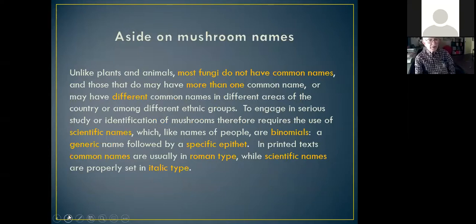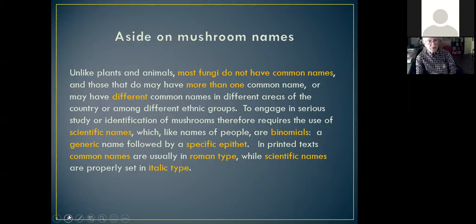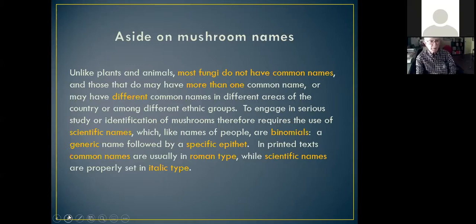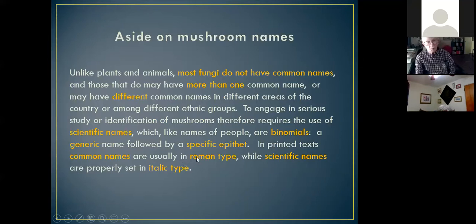One thing different about mushrooms compared to other plants and animals is that very few have common names. Some do, but they may have more than one common name or different names in different parts of the country. If you engage in serious study or identification of mushrooms, you're going to have to make peace with Latin names. Latin names, like people, are made up of a first name and a last name — the first is the generic name and the second is the species or specific epithet. Common names are in roman type; scientific names are in italic type.